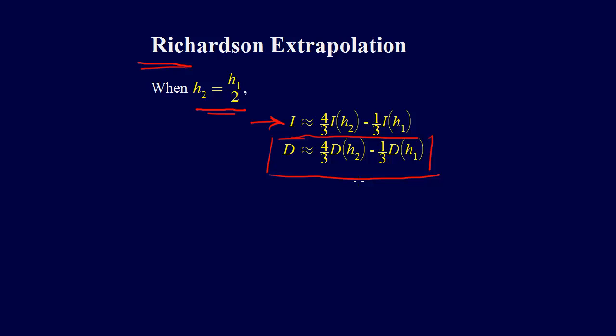Now, this takes our error from order H squared to order H to the fourth, for example. So this is a nice thing that we can do if we can evaluate the function, or we have the function at equally spaced intervals.